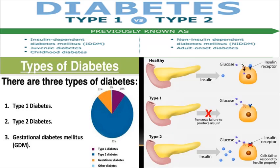In the healthy individual, insulin acts on insulin receptors allowing body cells to uptake glucose for energy or storage. In type 1 diabetes, there is failure to produce insulin so glucose accumulates in the blood. In type 2, insulin is produced but is either ineffective or there is resistance in insulin receptors, so cells fail to respond and glucose also accumulates in the blood.